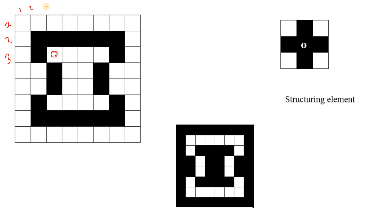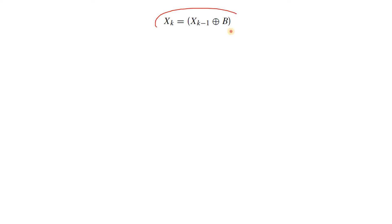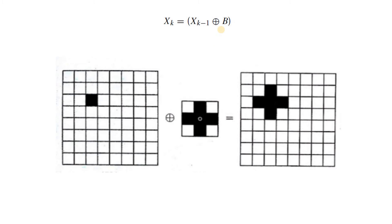If you consider row-wise — row one, two, three — and column-wise — one, two, three — the hole is by default background, which is zero in a binary image. This particular pixel is zero because it is the first pixel of our hole, but we will make it one. So we start from an image where the pixel at position (3, 3) is one, and we begin applying our structuring element and dilation technique from there. This formula implements the algorithm, and later you will understand its significance.